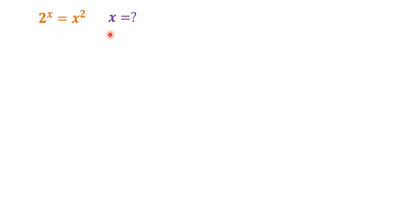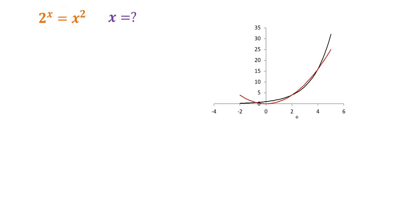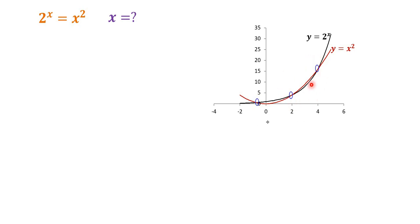We're going to figure that out in this video. First, I'll bring up the graph of the functions on both sides of this equation. Here is the graph: the black line is 2 to the power of x, and the red line is x squared. You can clearly see there are three intersections of the two functions — one at x=2, one negative root, and another positive root.